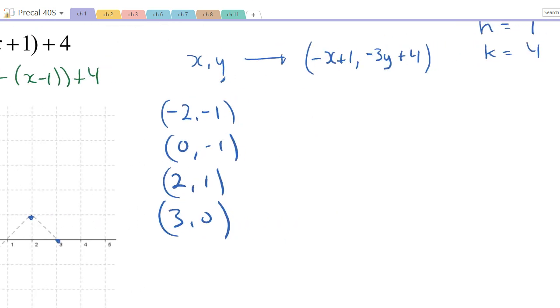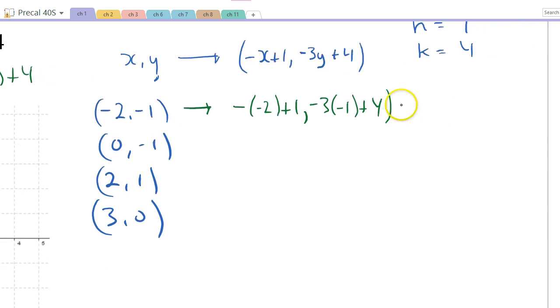All right, so over here, I'm going to get, this is going to get, my image now, will give me -(-2) + 1, comma. Now looking at the y values, -3 times this y, which is -1 plus 4, which is, now maybe I'll put another arrow here to simplify this. So -(-2) is 2, 2 + 1 is 3. And over here, -3 times -1 is positive 3, plus 4 is 7.